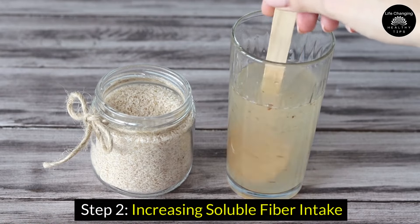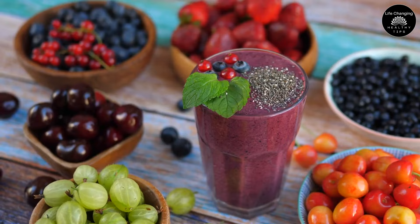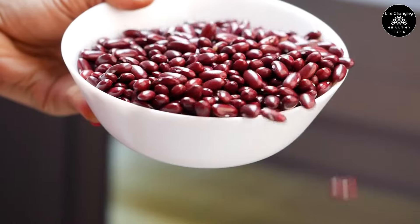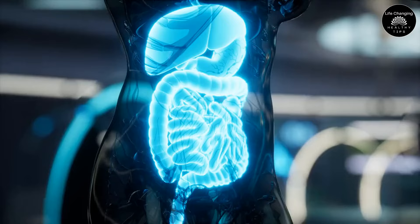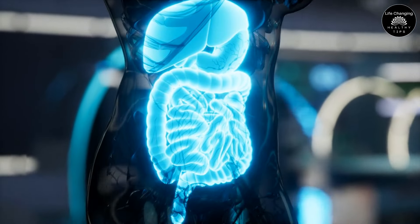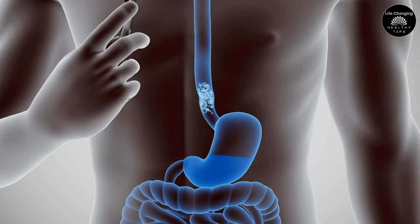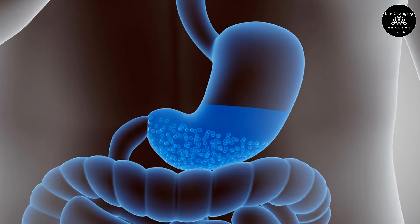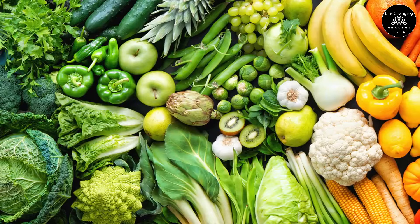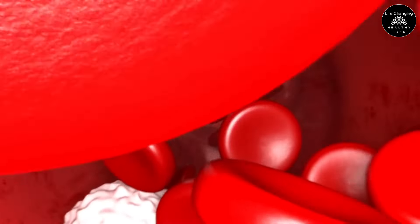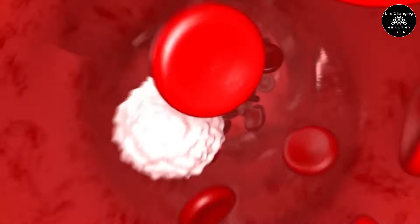Step 2. Increasing Soluble Fiber Intake. When soluble fiber, which may be found in fruits, oats, and beans, is mixed with water, it creates a gel-like substance in the digestive tract. This gel slows down the digestion and absorption of nutrients, including carbohydrates, resulting in a gradual release of glucose into the bloodstream.